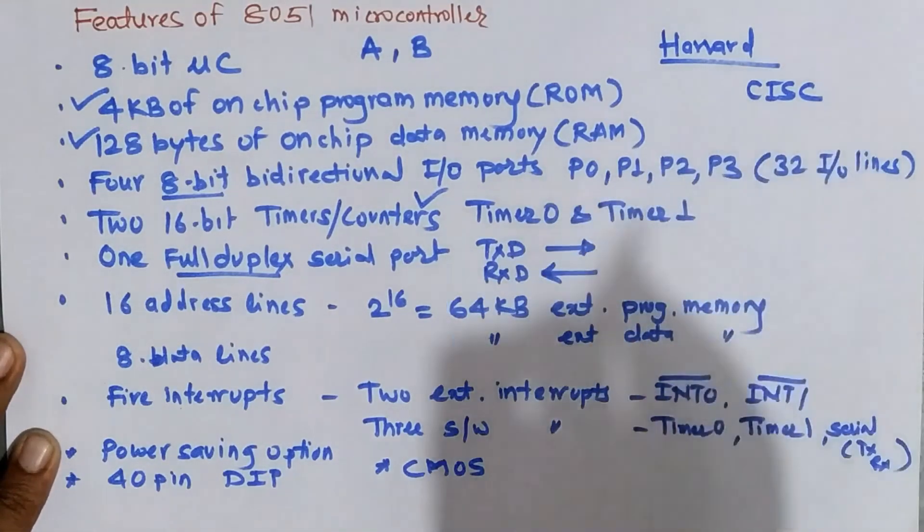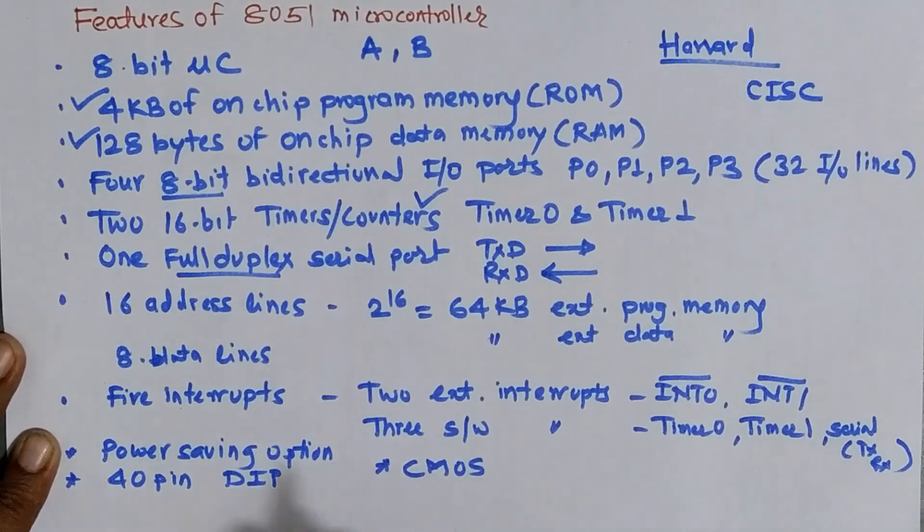The instructions of variable length are there. In total it is having 111 instructions. So in order to develop a program you have the choice of using these types of different instructions.